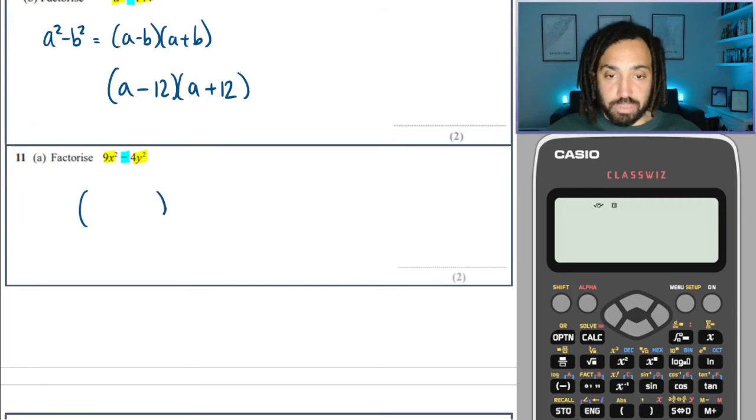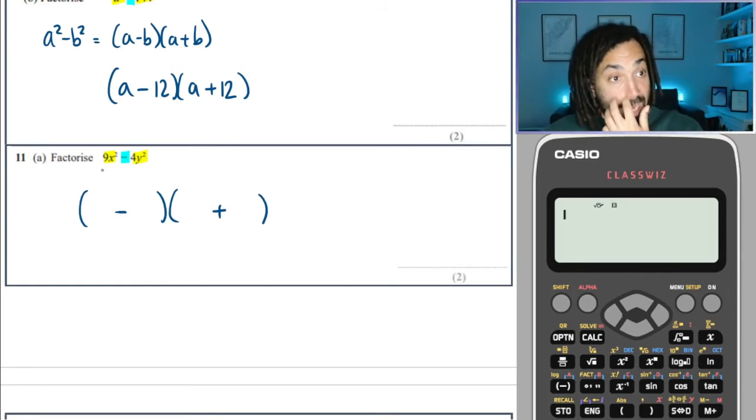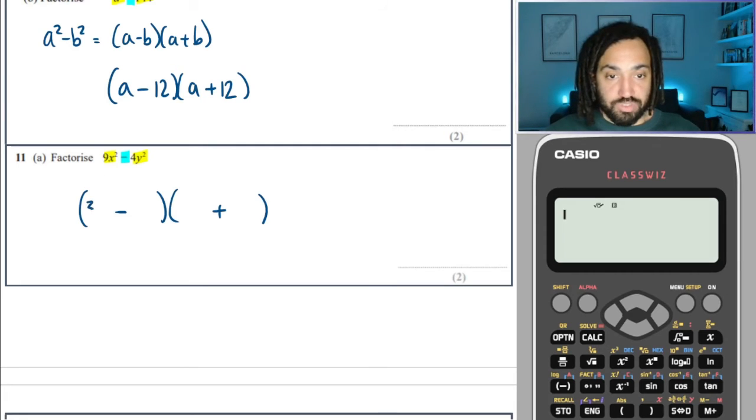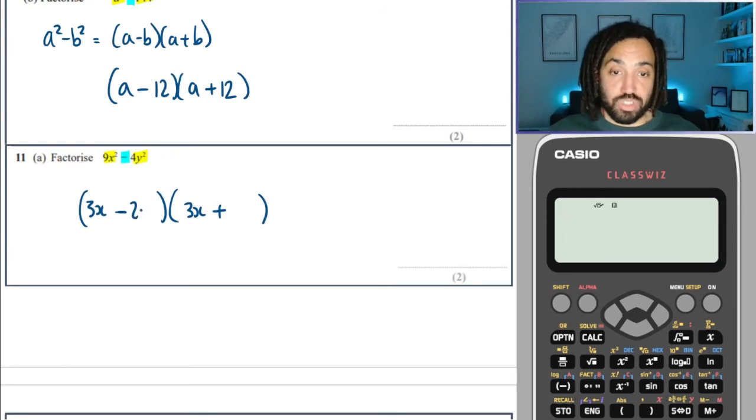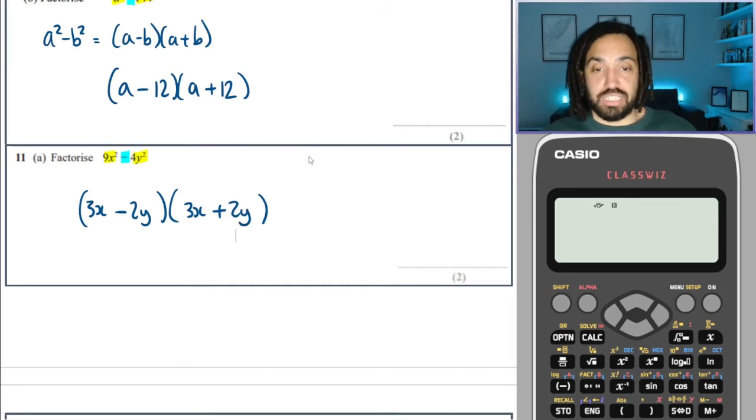So, open up our double brackets. We can put a minus and a plus in the middle. And first, we need to find the square root of 9x squared. Well, that is 3x. So that goes in the first slot. And then we need to find the square root of 4y squared, and that is 2y. And that is factorized.